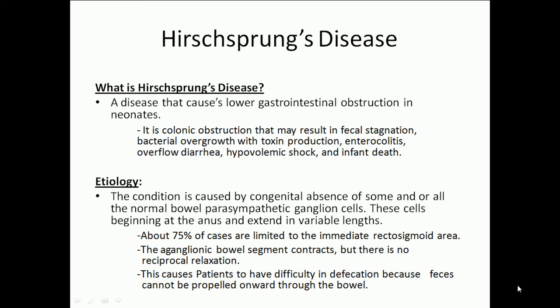Hirschsprung's disease is a colonic obstruction that may result in fecal stagnation, bacterial overgrowth with toxin production, enterocolitis, overflow diarrhea, hypovolemic shock, and infant death. The condition is caused by congenital absence of some or all of the normal bowel parasympathetic ganglion cells. These cells begin at the anus and extend in variable lengths.